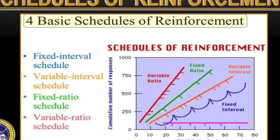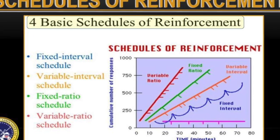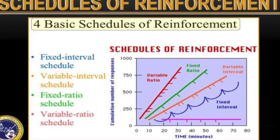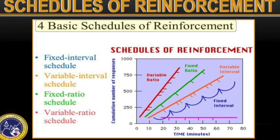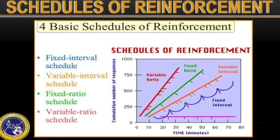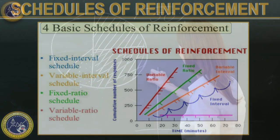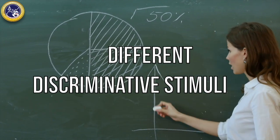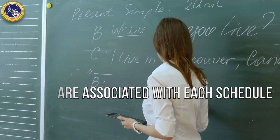Multiple schedules refer to two or more basic schedules of reinforcement — so think varied and fixed ratio and varied and fixed interval — occurring in alternation and independent of each other. Different discriminative stimuli are associated with each schedule.